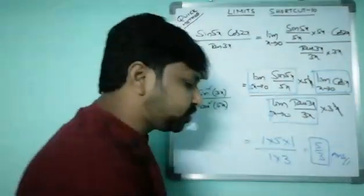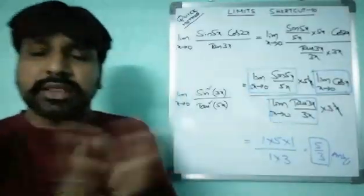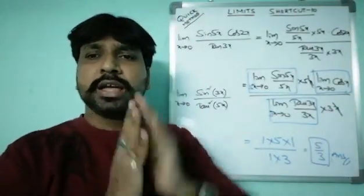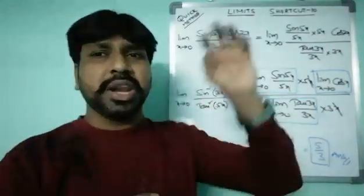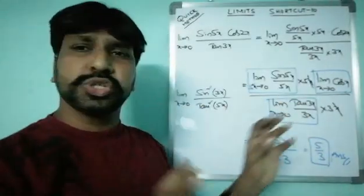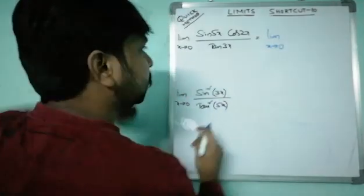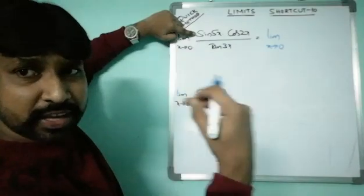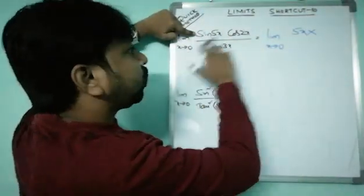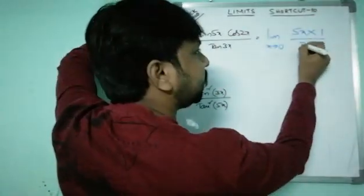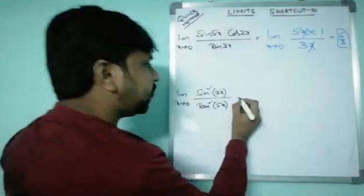This is the procedure. At the time of examination, we use the quick method. For quick method: whenever sin(5x) is there, write /5x × 5x, write 5x down. For cos(2x), no denominator needed — cos(0) = 1. For tan(3x), write /3x × 3x, write 3x down. The x's cancel and you get 5/3 in just 2 seconds.